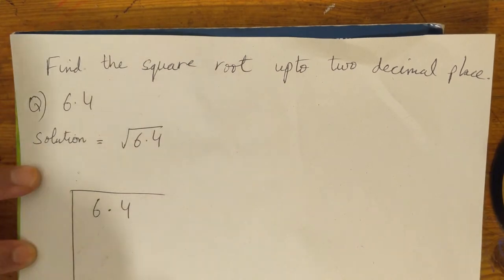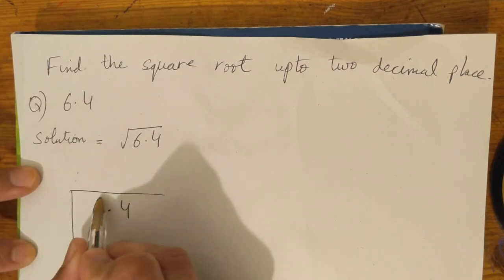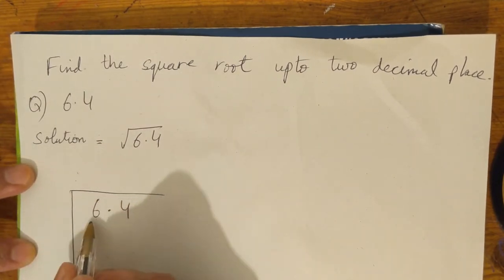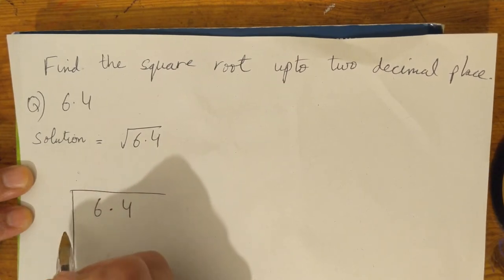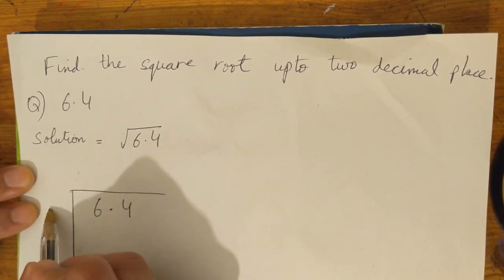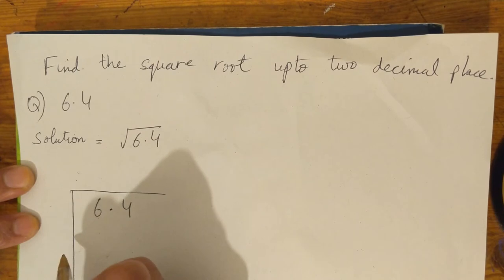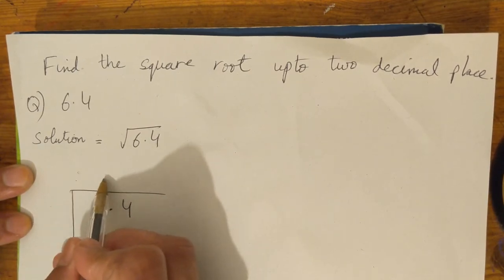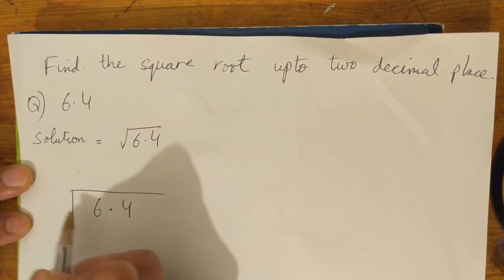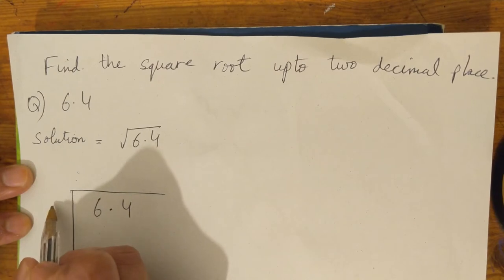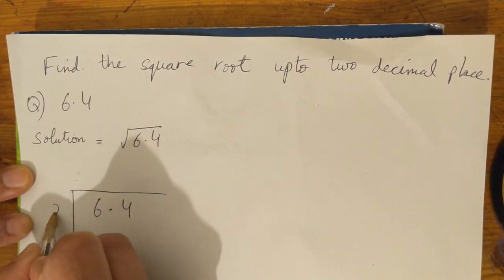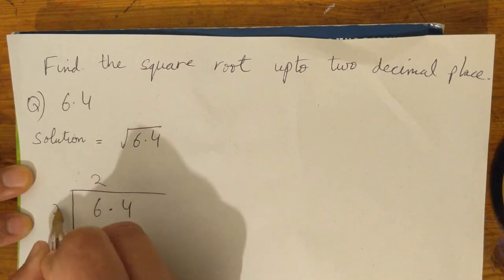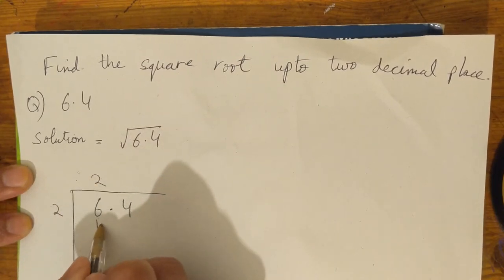After that, we have to do 6. We can't join. We have to write the number here. If I write 1 and 1, then answer is 1. If we write 2 and 2, then it will be 4. If we write 3, then it will be 9. So we have to write 2 here. If we write 2 here, then the answer is 4.